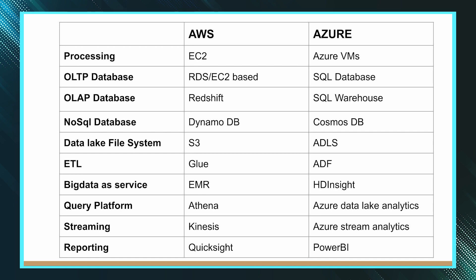For NoSQL databases, DynamoDB is the service you will get in AWS, and Cosmos DB is what you will get in Azure. For data lake file system storage, you can implement it in S3 in AWS, and similarly ADLS — Azure Data Lake Storage — in Azure, where you can set up your data lake. If you're looking for ETL, Glue is the service in AWS, and similarly ADF — Azure Data Factory — is the equivalent in Azure.